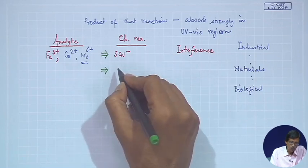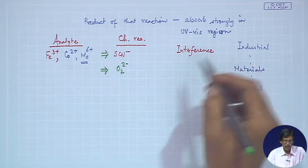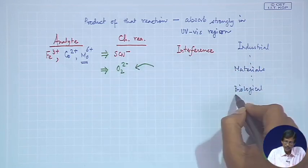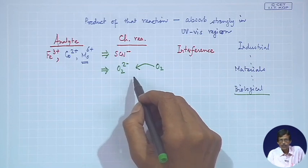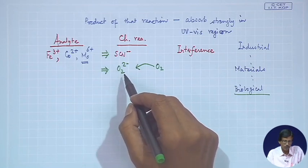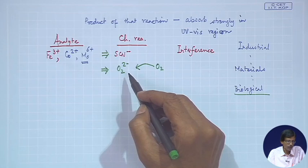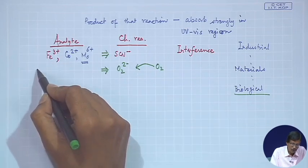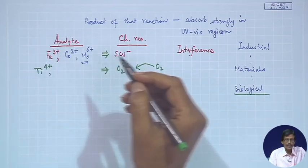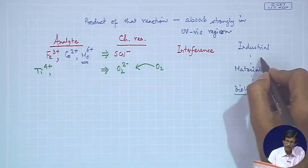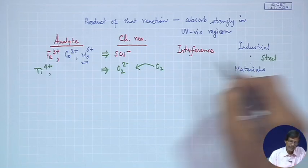Peroxide ion is another useful chromophoric reagent. It is generated in biological systems by reduction of O2, or it can be added as hydrogen peroxide or its corresponding salt in the presence of a weak base. It forms good peroxo compounds, useful for detecting titanium Ti4+ — a common component in industrial steel samples.